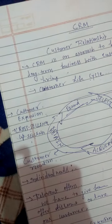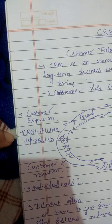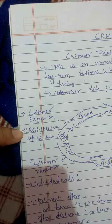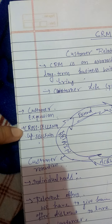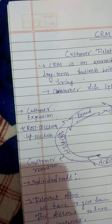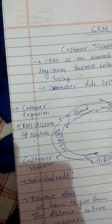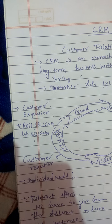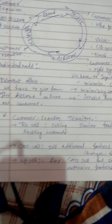The fourth step is Extend — customer extension through cross-selling. Cross-selling means selling with some discount or giving extra products. For example, if you sell a mobile phone, you also keep mobile covers, chargers, and batteries. That is called cross-selling.